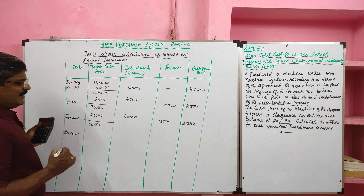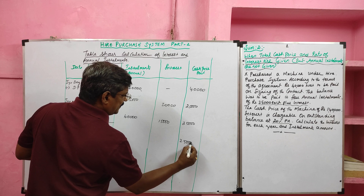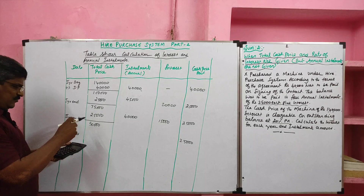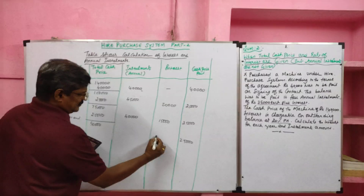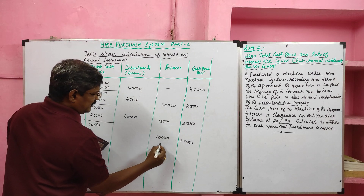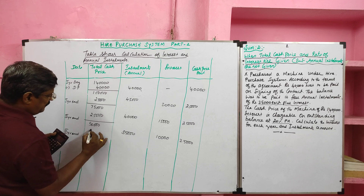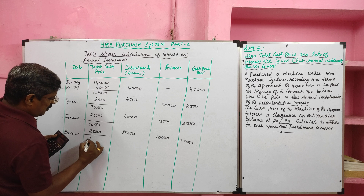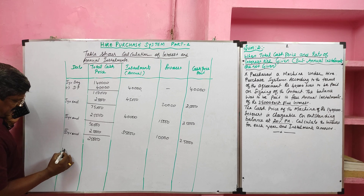At the third year end, again ₹25,000 is paid for the principal. On ₹50,000 at 20%, the interest is ₹10,000. So the third installment value is ₹35,000, of which ₹25,000 is deductible from the total cash price. The last year outstanding balance is ₹25,000.